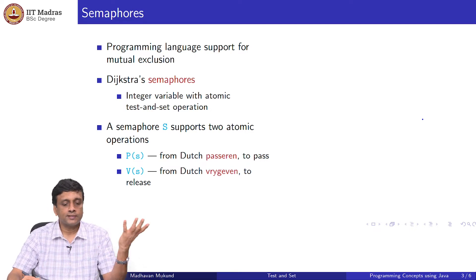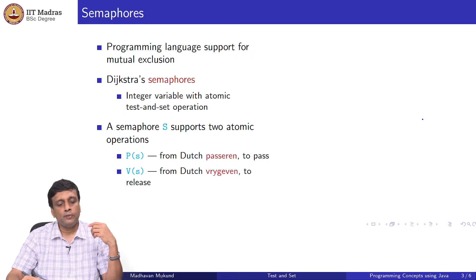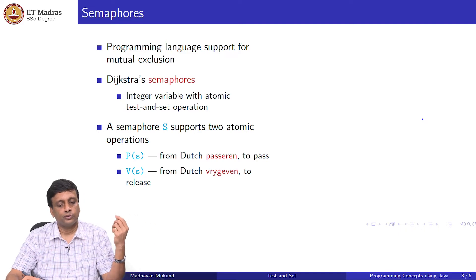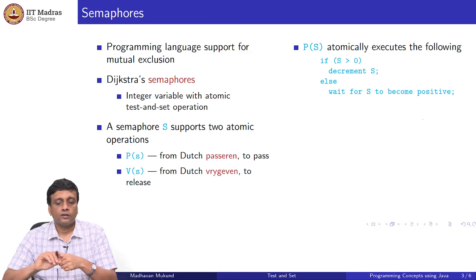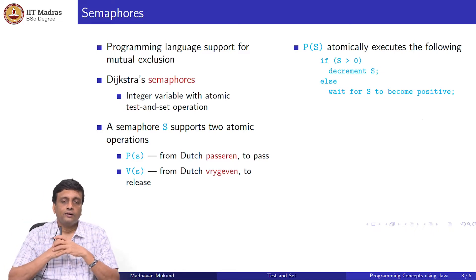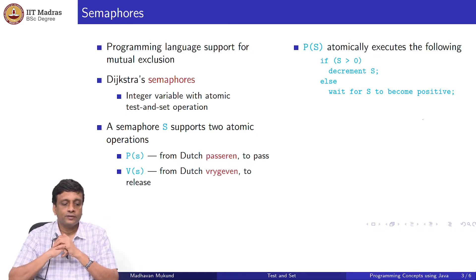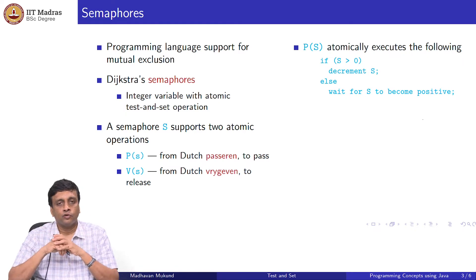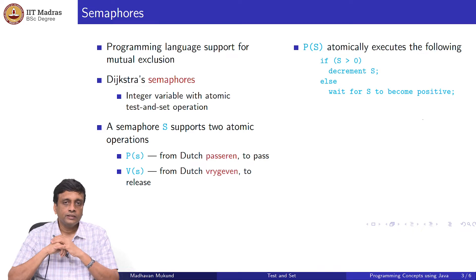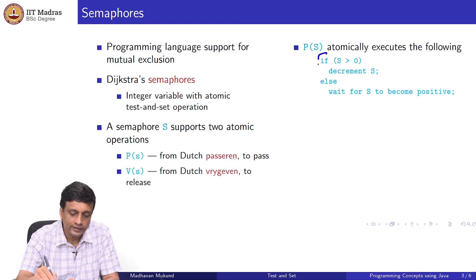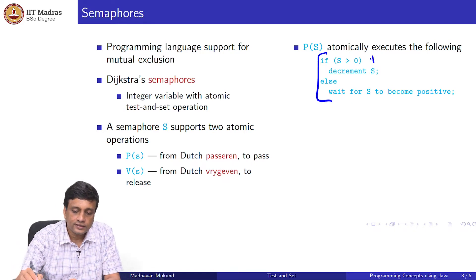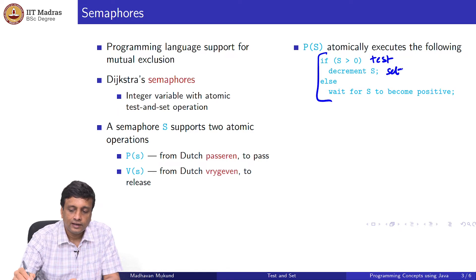The test and set operations are called somewhat peculiarly P and V. These come from two Dutch words, passaren and vrijgeven. Essentially, P is used to gain access and V is used to release. When we do P with respect to a semaphore s, it checks whether the current value of the semaphore is above 0. If it is above 0, then you decrement it. If it is not above 0, then you wait for it to become above 0. This is the test and set. This is the test, and this is the set, and there is a wait.